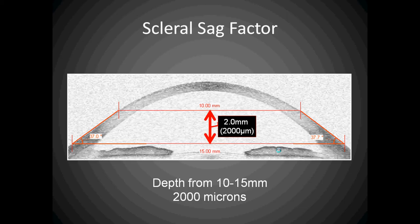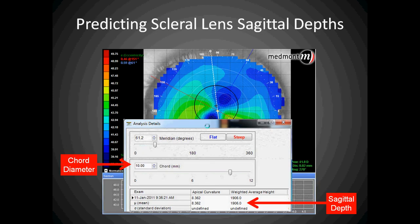If our corneal topographer can measure the sagittal depth from a 10mm cord to the peak of the eye, then we have a very powerful tool for predicting the initial scleral lens required. Because we know that the average sagittal depth of the eye from a 10 to 15mm cord is approximately 2,000 microns, and the Medmont will be capable of measuring that sagittal depth.